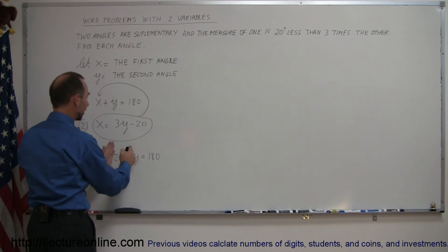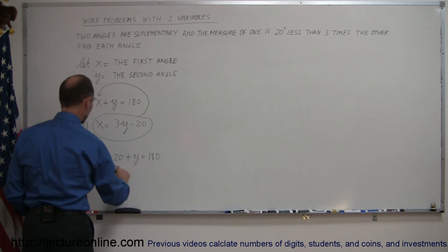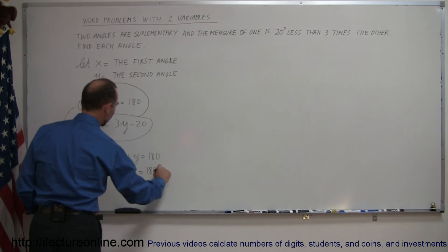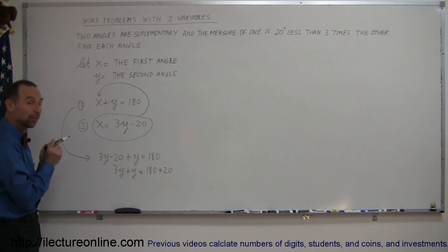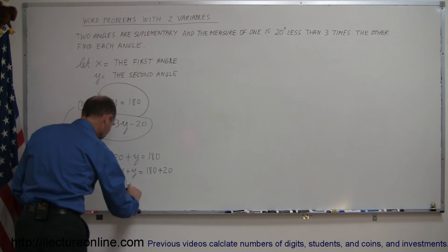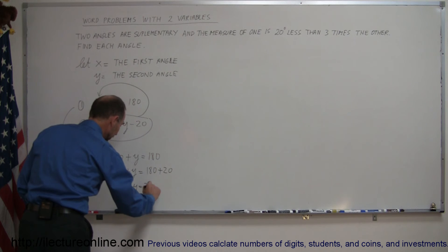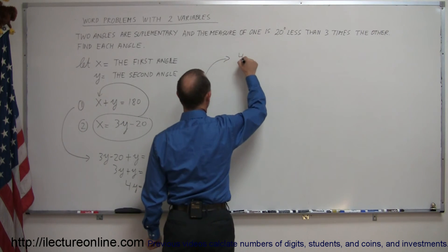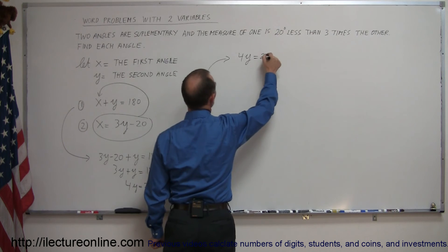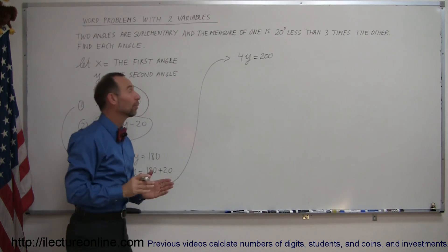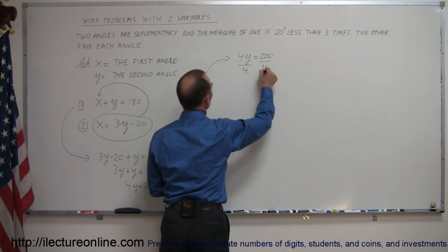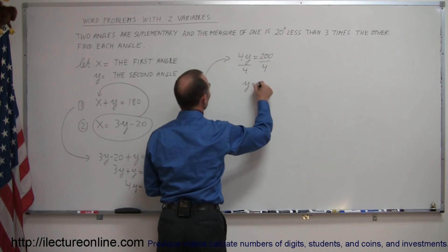I keep all the y's on one side, all the numbers on the other side. So, 3y plus y is equal to 180 plus 20. Combining like terms on both sides of the equation, I get 4y is equal to 200. And then, moving up here, so we have 4y equals 200. And now I divide both sides of the equation by the coefficient in front of y. So divide this by 4, divide this by 4, and I get y equals 50.